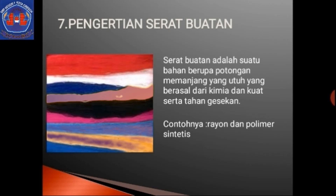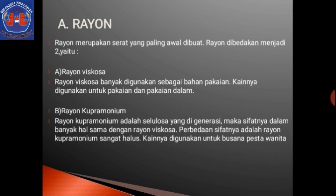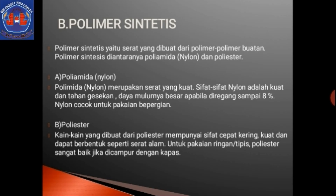Selanjutnya kita akan membahas tentang serat buatan. Serat buatan adalah suatu bahan berupa potongan memanjang yang utuh yang berasal dari kimia, kuat, serta tahan gesekan. Misalnya bahan rayon, polimer sintetis. Rayon merupakan serat yang paling awal dibuat. Rayon dibedakan menjadi rayon viscose dan rayon cupramonium. Bahan rayon biasanya digunakan untuk membuat pakaian. Polimer sintetis diolah menjadi bahan-bahan seperti nylon dan polyester.